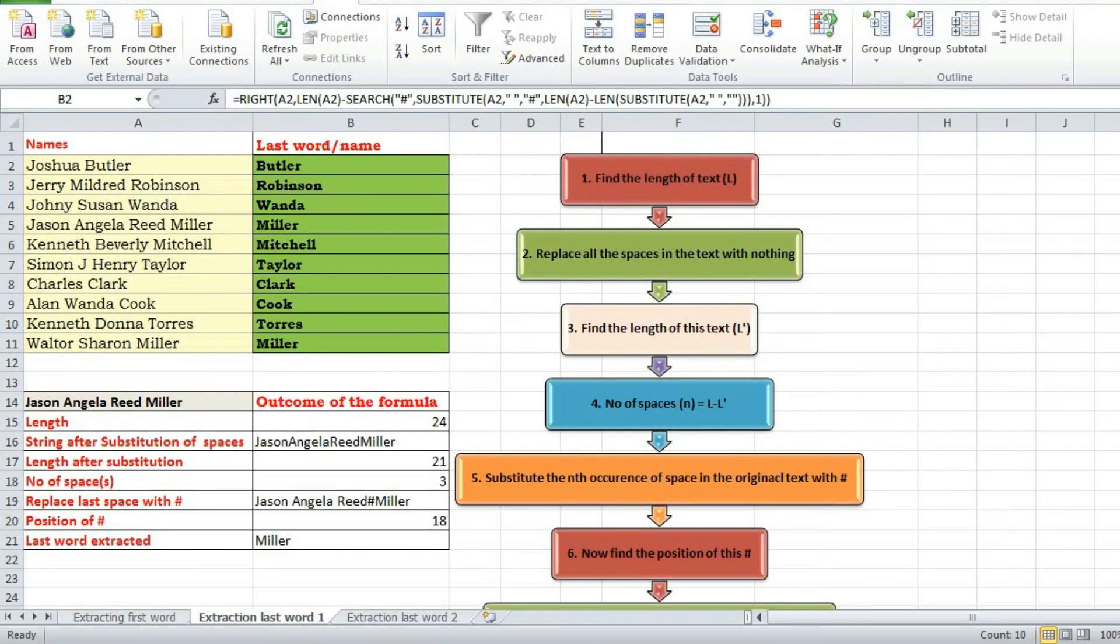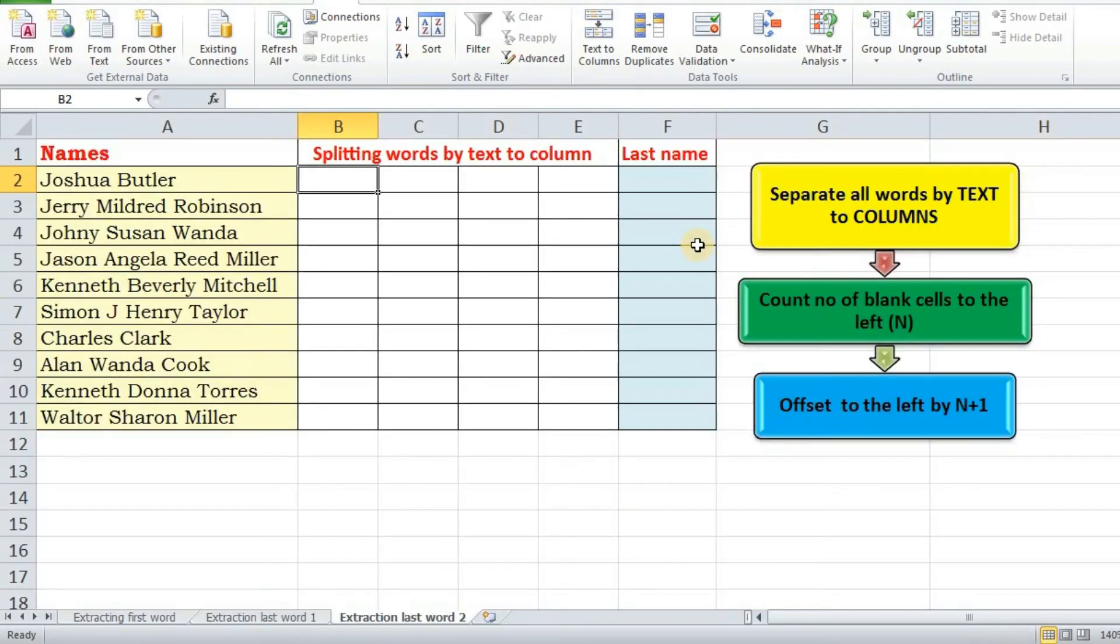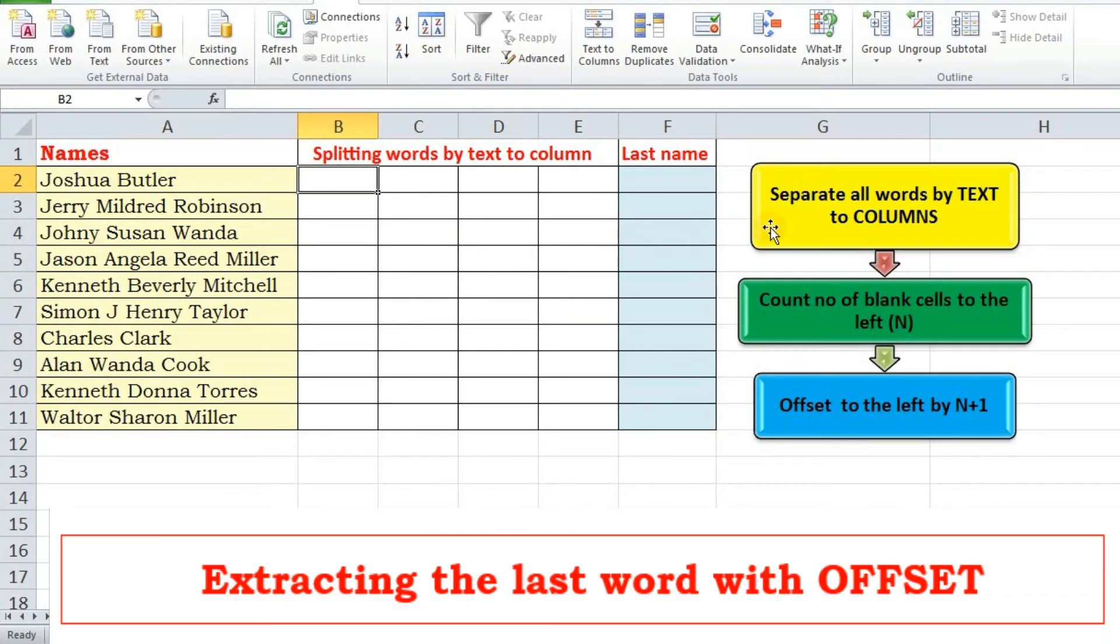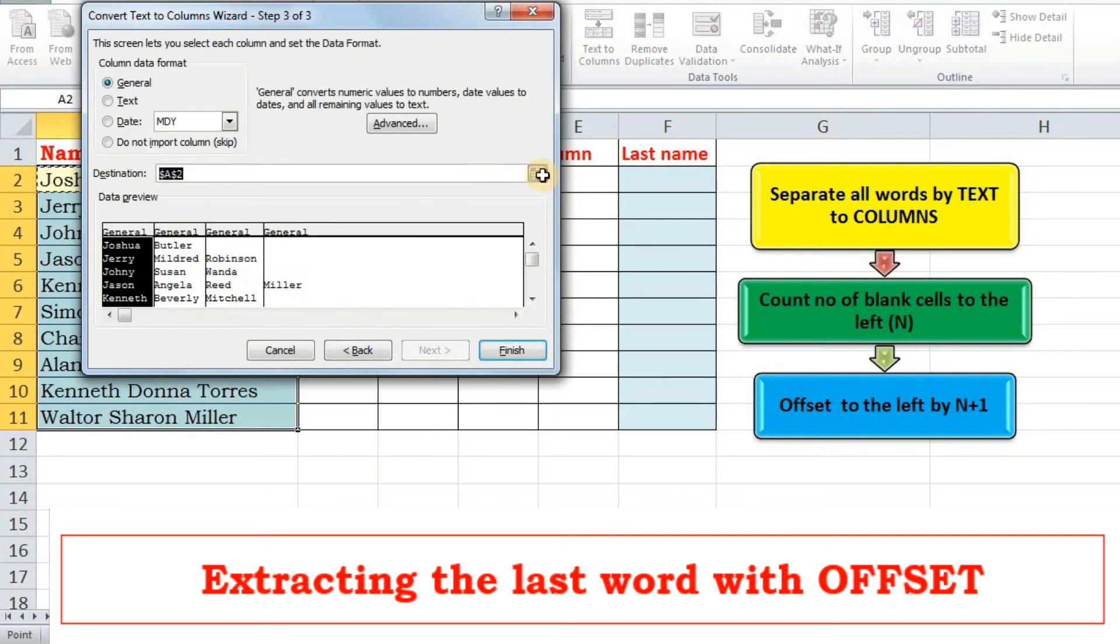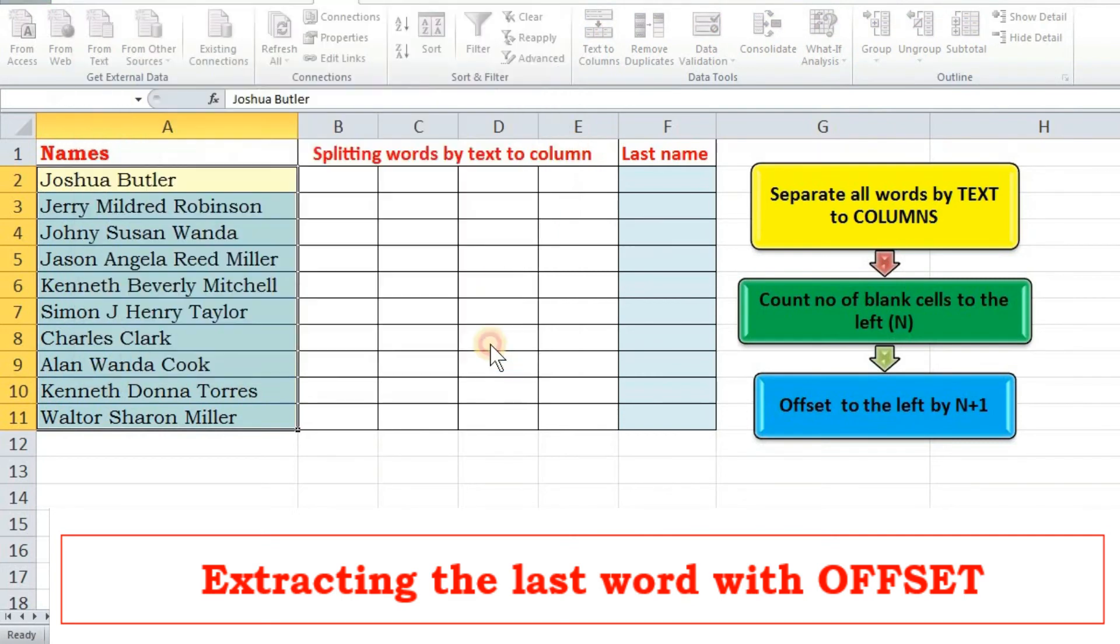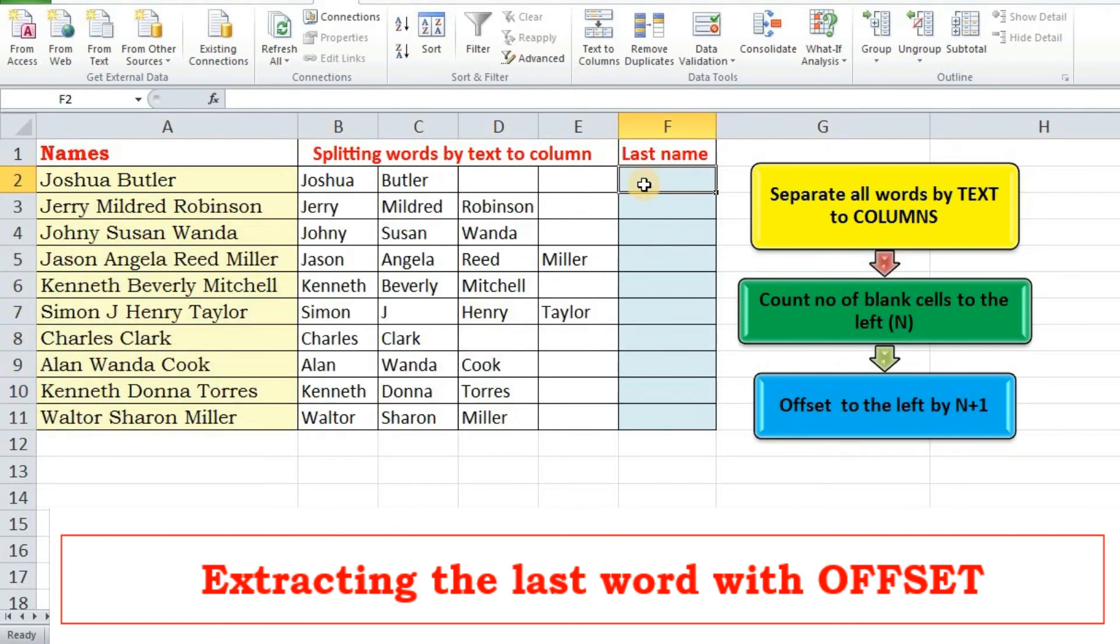So this method no doubt is complicated and involved so much of our effort. Now as promised I'm going to show you a classic and incredibly easy method to pull in the last word. Look at the flowchart. We first need to separate all words by text to column. Now I want all these last names to be in column F. To fetch that last name to this place we need to move backward 1, 2, and 3, that is 2 blank cells plus 1.